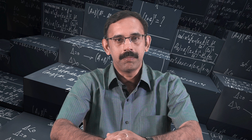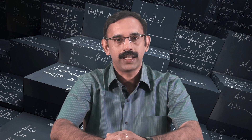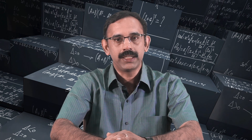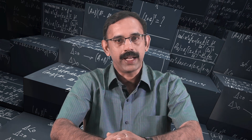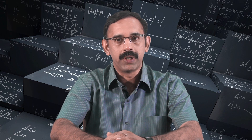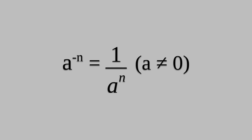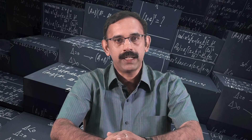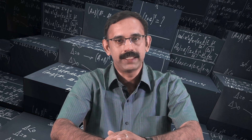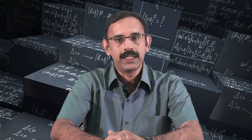Dear students, do you remember what we learned in your last class about exponents? We learned that very small numbers can be expressed in standard form using negative exponents. We also learned that when a is a non-zero number and n is a natural number, a raised to minus n is 1 divided by a raised to n, which is called the multiplicative inverse of a raised to n. In today's class, we are going to learn more details about powers and exponents and some of their properties.